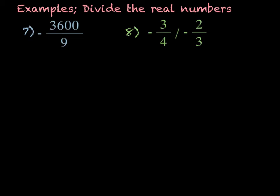For the last examples, we're going to divide real numbers. For number 7, we have negative 3,600 divided by 9. We can divide: 36 divided by 9 is 4, there are two zeros so that's 400. There is an odd number of negative signs, so it's negative. Your answer is negative 400.